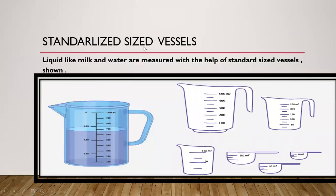A standardized sized vessel is used to measure liquid like milk, water, and oil. We can measure these types of liquid with the help of a standard size vessel. The vessels can be of 1 litre, 500 millilitres, 250 millilitres, 100 millilitres, 50 millilitres, 40 millilitres, or 20 millilitres. The size of vessels can be different, and according to the vessel, we can find out how much liquid it can contain.